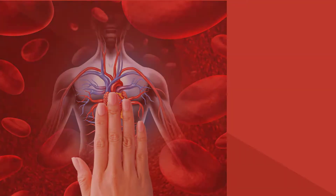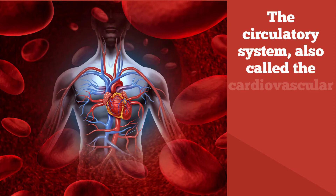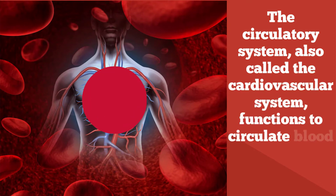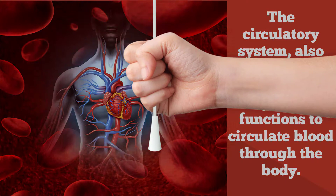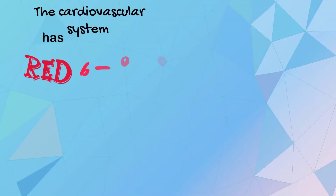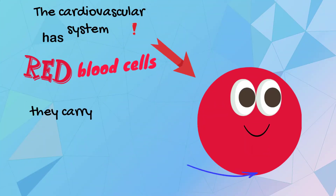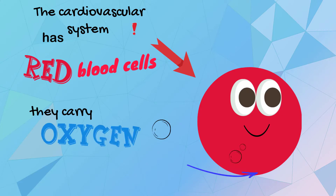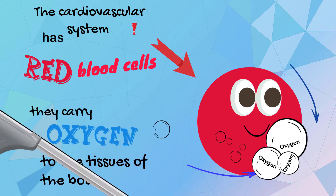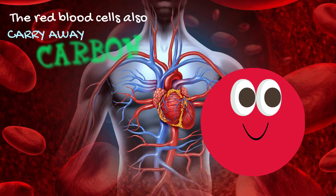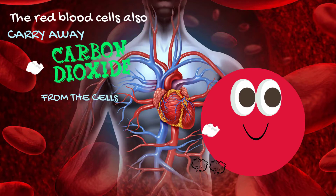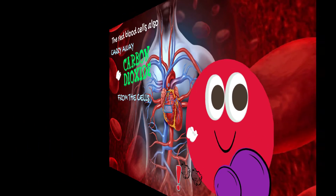The circulatory system, also called the cardiovascular system, functions to circulate blood through the body. The cardiovascular system has red blood cells. Red blood cells carry oxygen to the tissues of the body, and also carry away carbon dioxide from the cells.